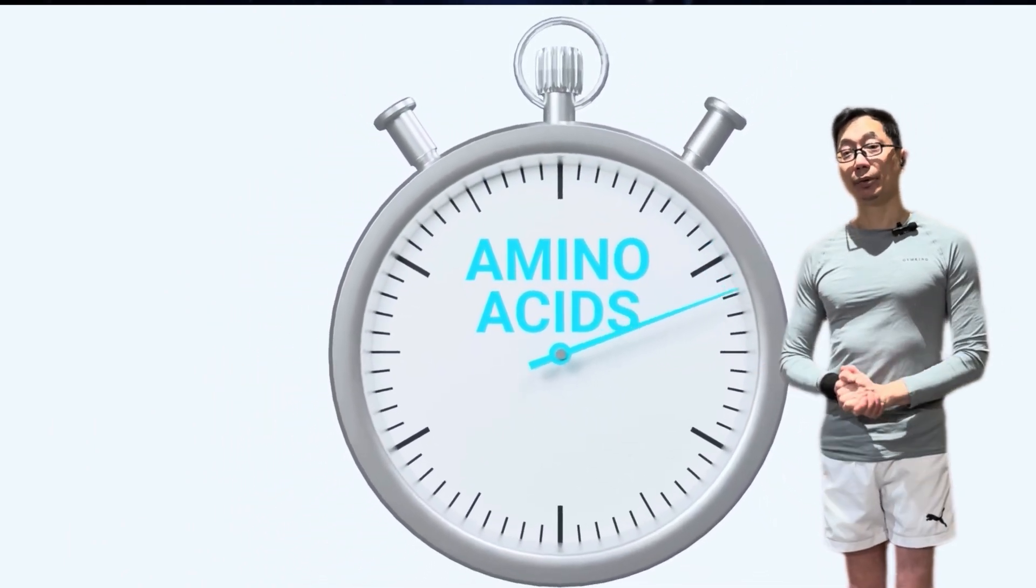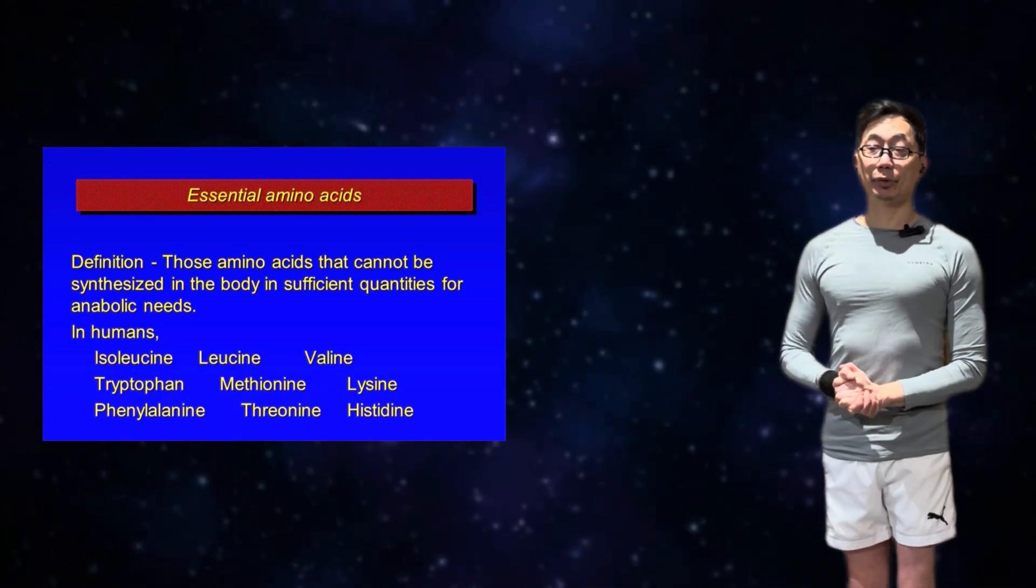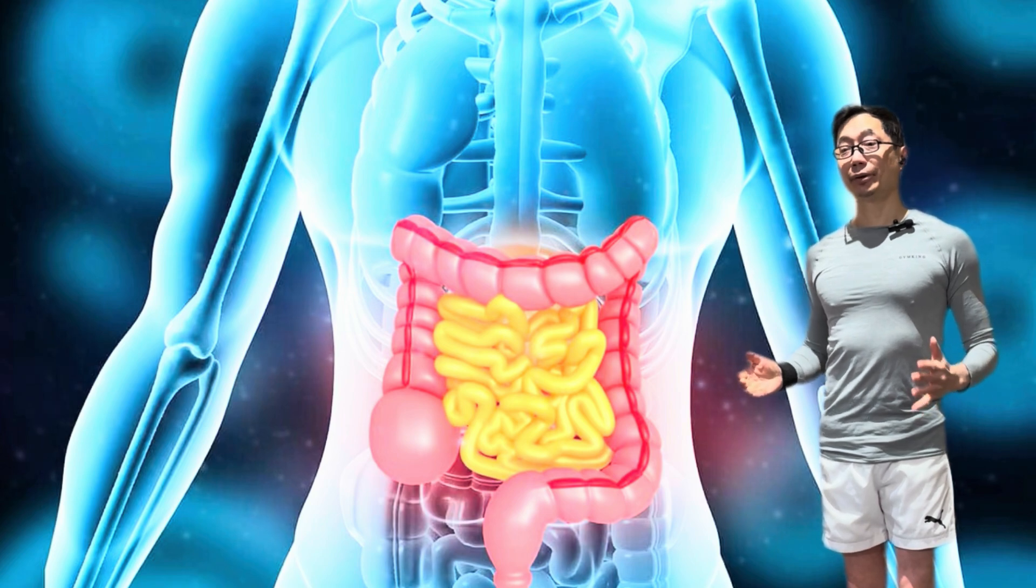And these are also known as essential amino acids. And something else to consider about the type of protein that you ingest is how fast it can be digested and absorbed.